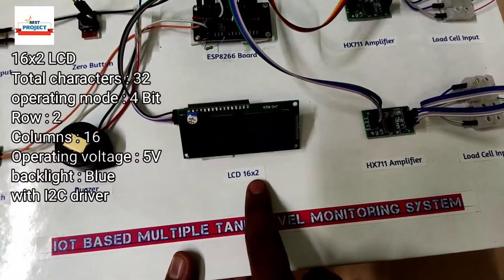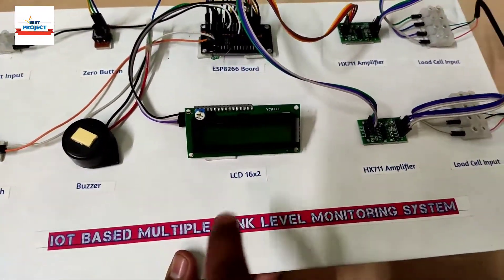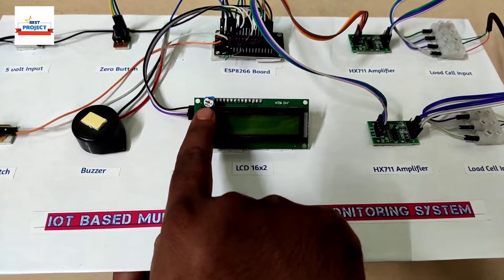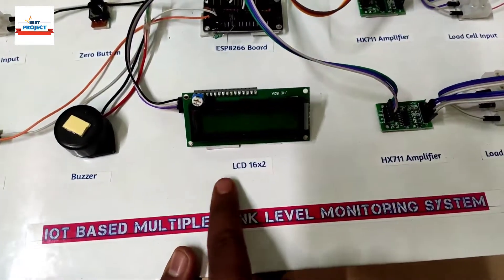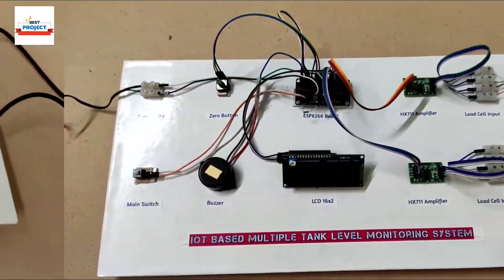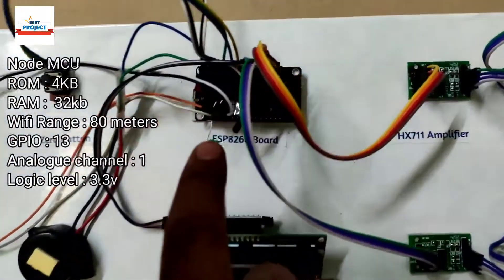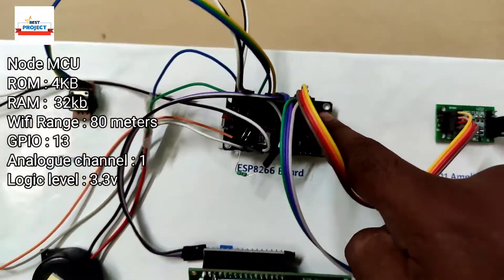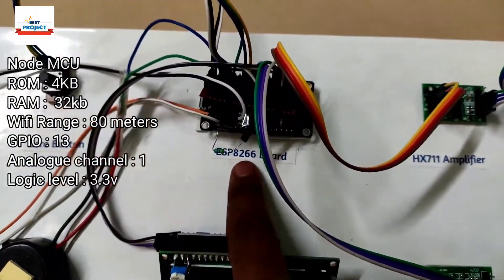The next component is a 16x2 LCD used to display both tank level and weight. There's also a potentiometer to control the LCD brightness.